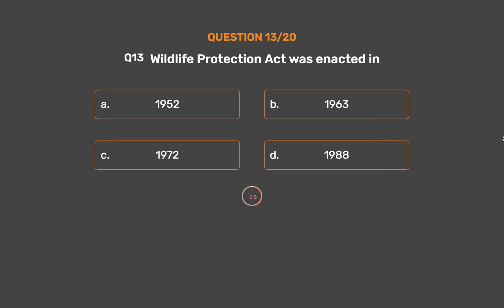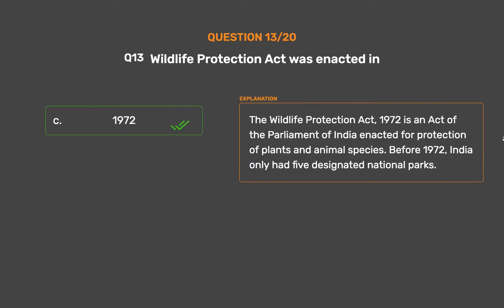Question number thirteen: the Wildlife Protection Act, 1972, is an act of the Parliament of India enacted for protection of plants and animal species. Before 1972, India only had five designated national parks.